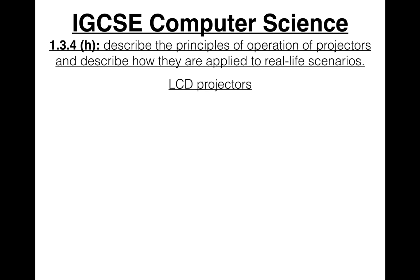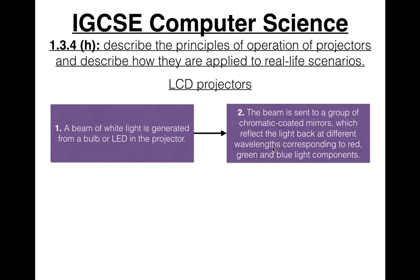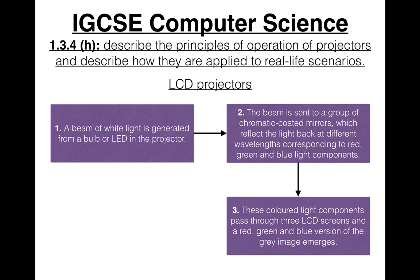Now let's look at LCD projectors. Step 1: a beam of white light is generated from a bulb or LED in the projector. The beam is sent to a group of chromatic coated mirrors which reflect the light back at different wavelengths corresponding to red, green, and blue light components. These coloured light components pass through three LCD screens.